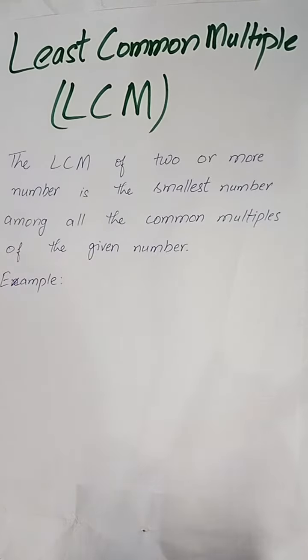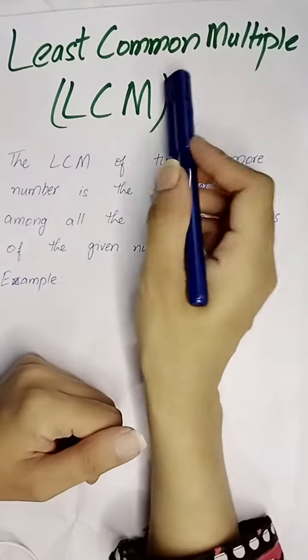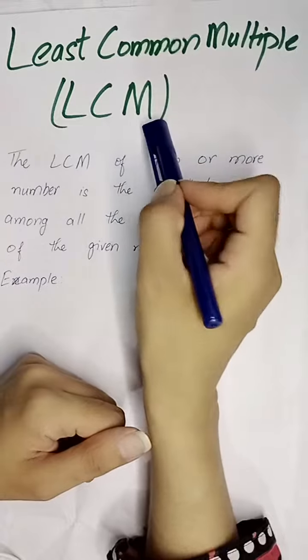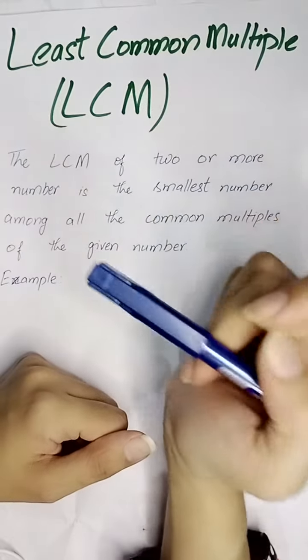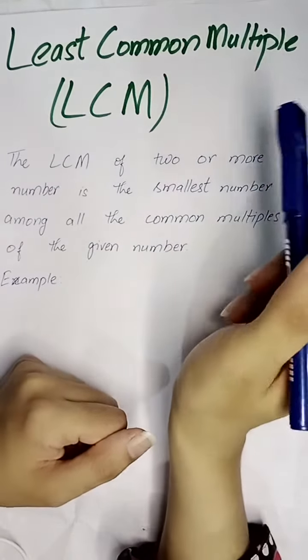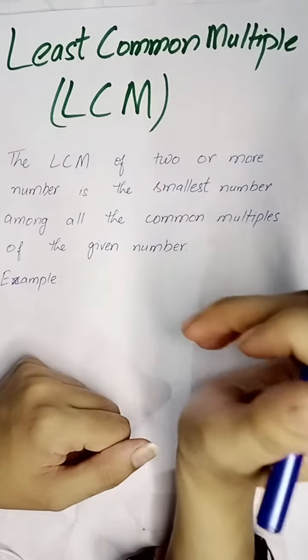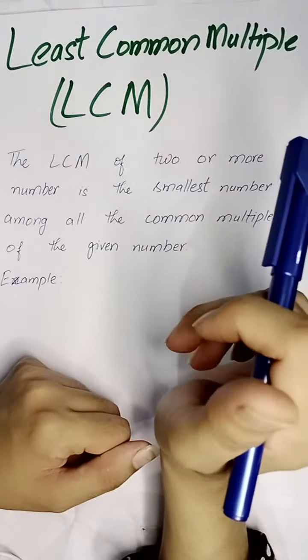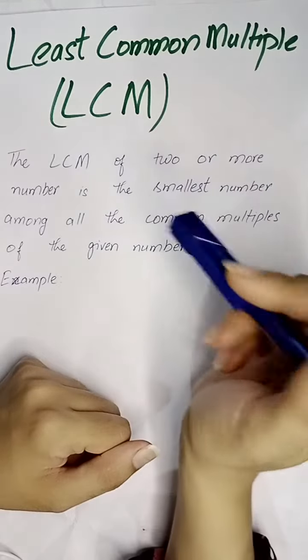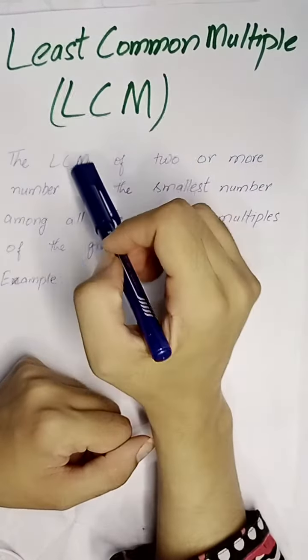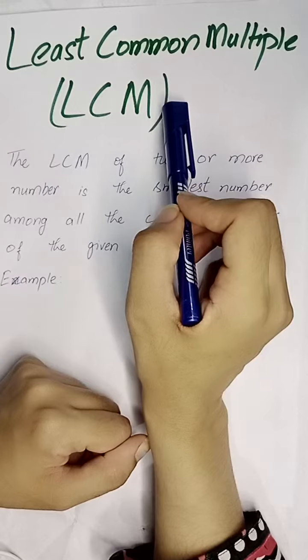Bismillah ar-Rahman ar-Rahim, assalamu alaikum. Least Common Multiple, LCM. What is LCM? The LCM of two or more numbers is the smallest number among all the common multiples of the given numbers.